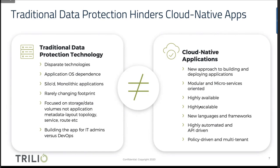Cloud native applications, by contrast, are modular and microservices-oriented. Each has its own identity. They are highly available, highly scalable, and change their footprint on demand. They are built with new languages and frameworks, and are highly automated and API driven. If you had to manage all those individual components individually, it would be a management nightmare — that's why there's a lot of automation and policy-driven management of a cloud native landscape.